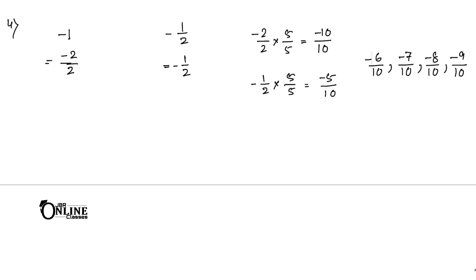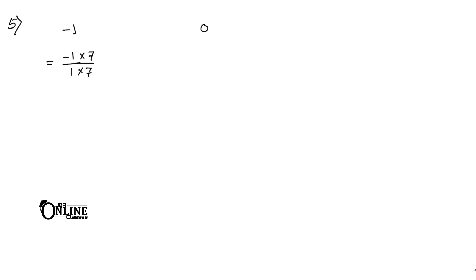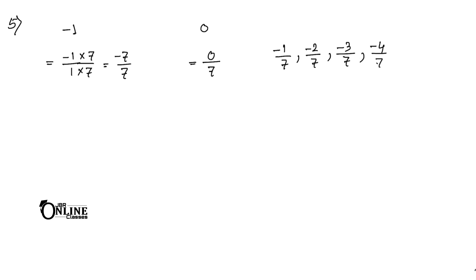Sum number 5: find 6 rational numbers between -1 and 0. Multiply both by 7 — so -1 becomes -7/7 and 0 becomes 0/7. The six rational numbers are: -1/7, -2/7, -3/7, -4/7, -5/7, and -6/7.